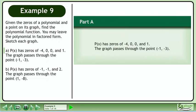Given the zeros of a polynomial and a point on its graph, find the polynomial function. You may leave the polynomial in factored form. Sketch each graph.